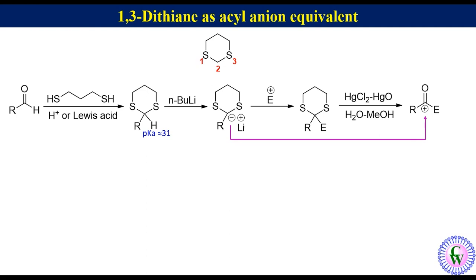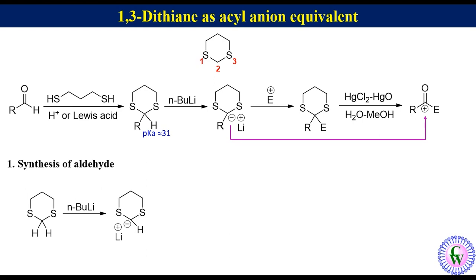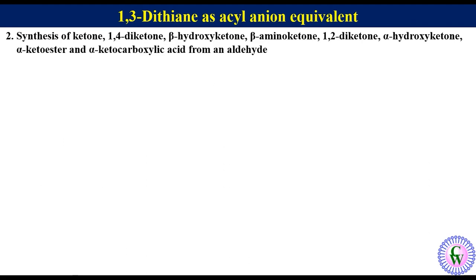Now let's see what type of molecules we can make using the dithiane umpolung strategy. The first is synthesis of an aldehyde. Unsubstituted 1,3-dithiane reacts with n-butyllithium to produce a carbanion, which is then allowed to react with an alkyl halide to produce 2-alkyl-1,3-dithiane. After hydrolysis in the presence of mercuric cation, it gives an aldehyde. Second is synthesis of ketone, 1,4-diketone, beta-hydroxyketone, beta-aminoketone, 1,2-diketone, alpha-hydroxyketone, beta-ketoester, and alpha-ketocarboxylic acid from an aldehyde.